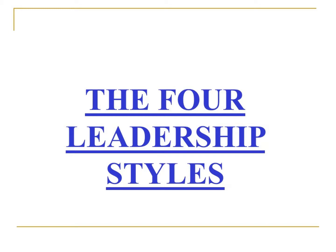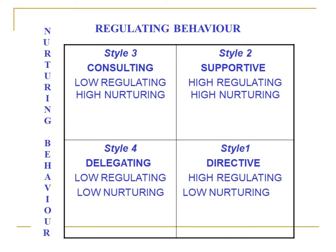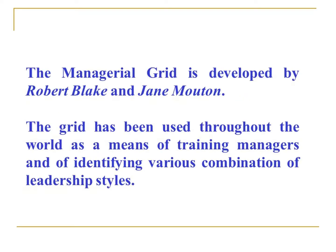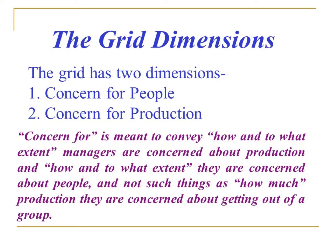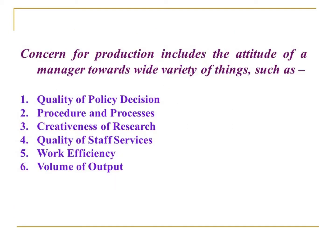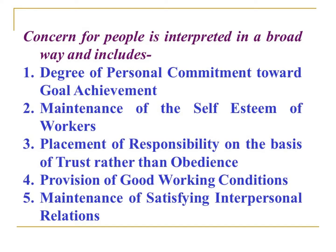Argyris distinguished between three tasks of an intervener: namely, to generate valid and useful information, to help the client to make free and informed choices, and to assure the client's internal commitment to choices made. Generating valid and useful information refers to the factors and their interrelationships that create problems for the client's system.